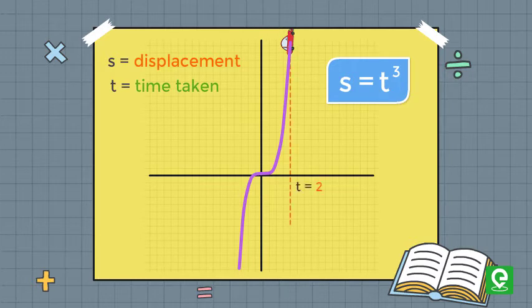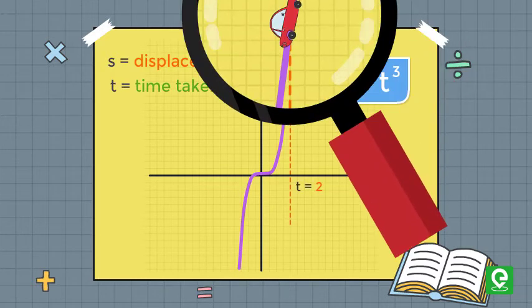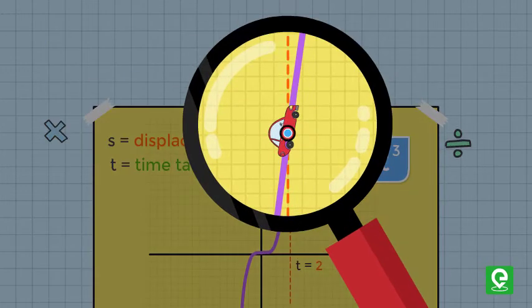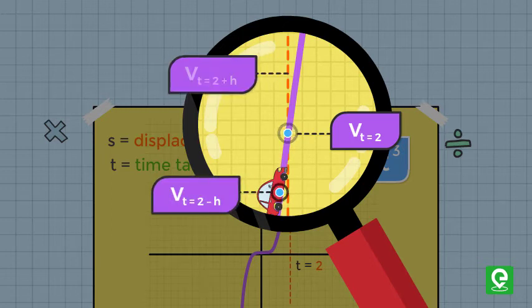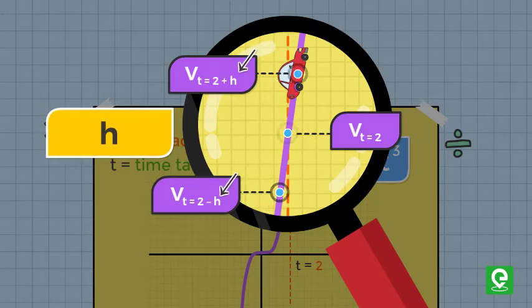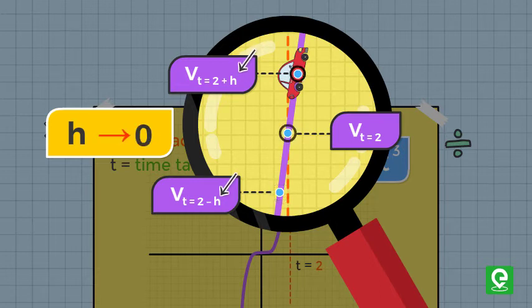So the instantaneous velocity at t = 2 can be thought to be same as the velocity at t = 2 - h and 2 + h where h is an infinitesimally small positive quantity approaching 0.